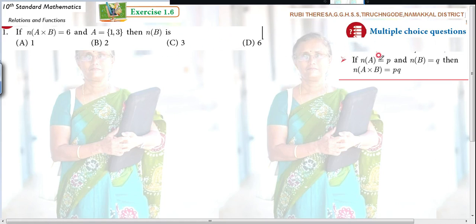First, before doing the problem, you can see this note. If n(A) equals P and n(B) equals Q, then n(A × B) equals P × Q. That means n(A × B) equals n(A) × n(B).